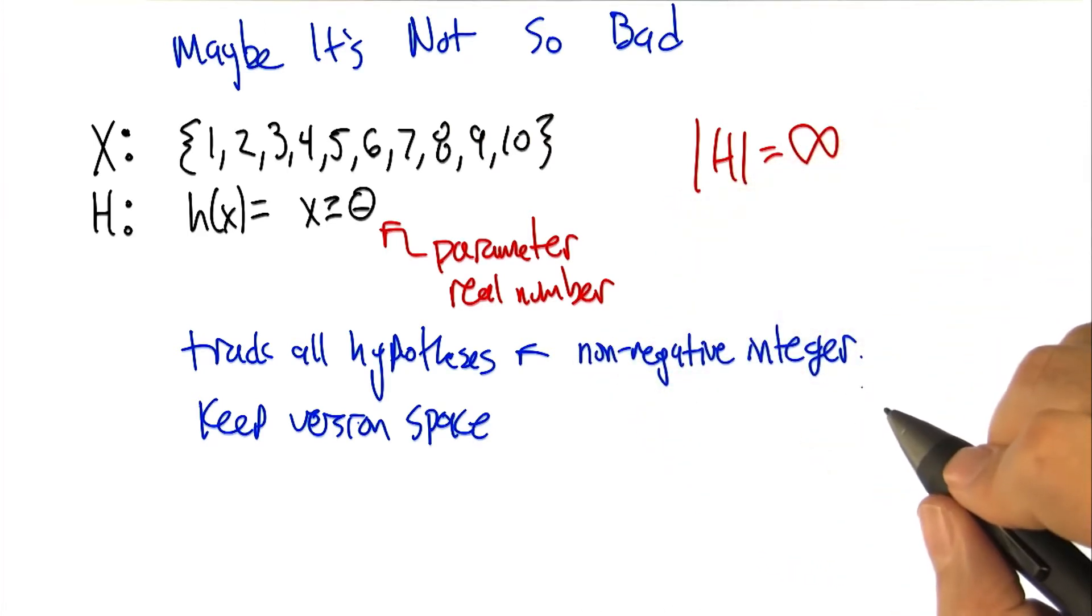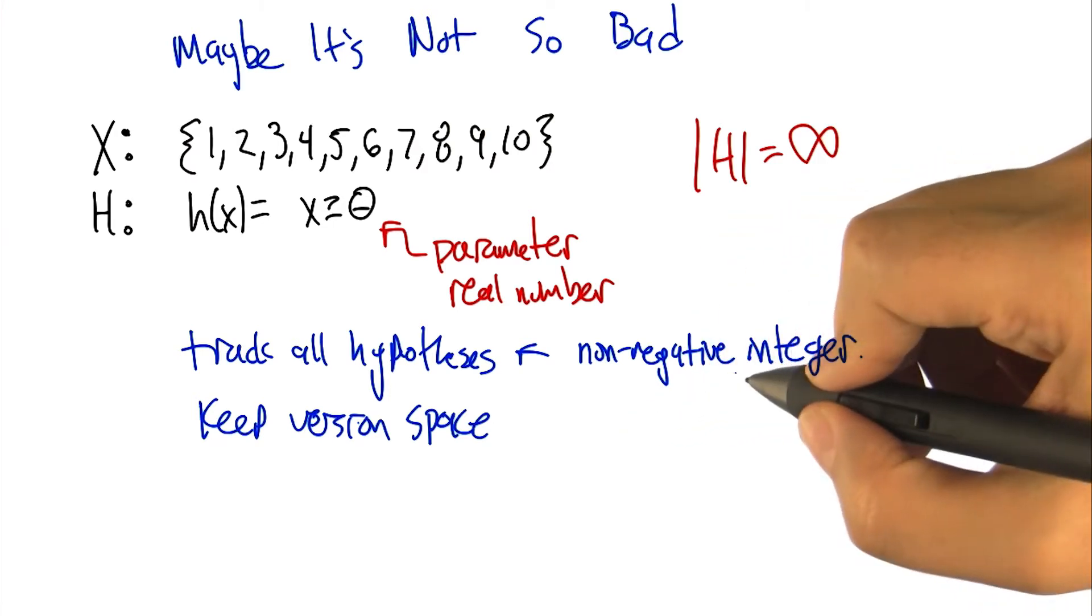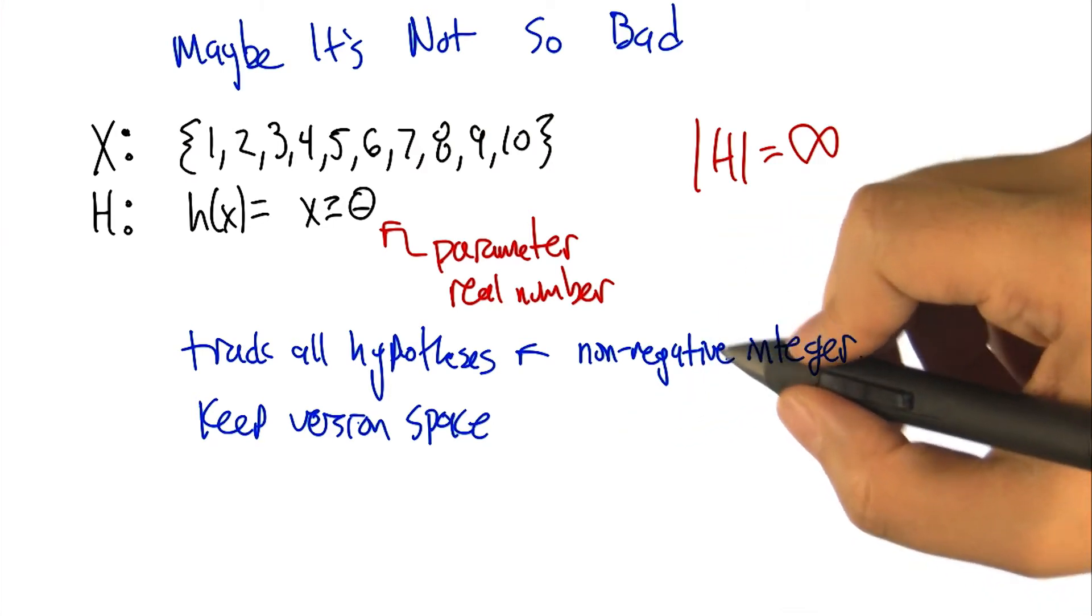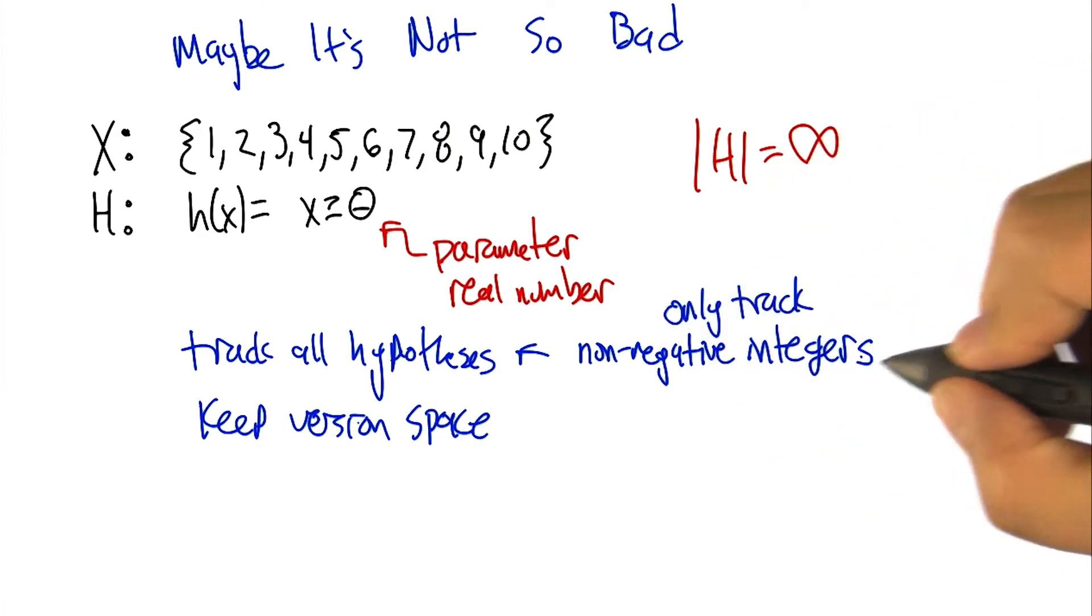That's true, though there's still an infinite number of those. True, but it doesn't matter because the size of x is itself finite. So, any value of theta greater than 10, for example, doesn't matter. It doesn't matter because it will always give you the same answer. All right, so if we only track the non-negative integers, 10 or below.